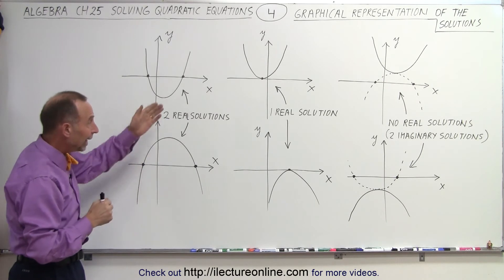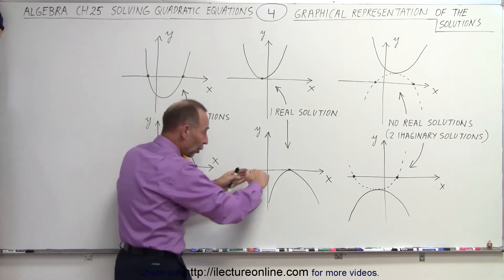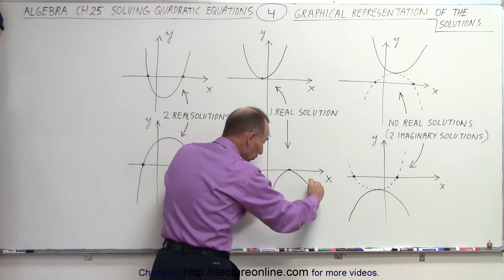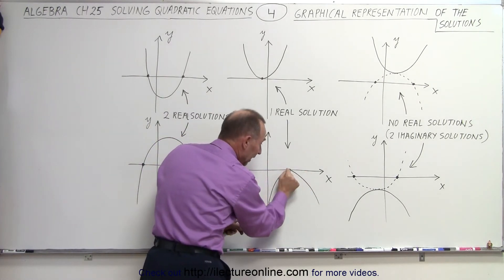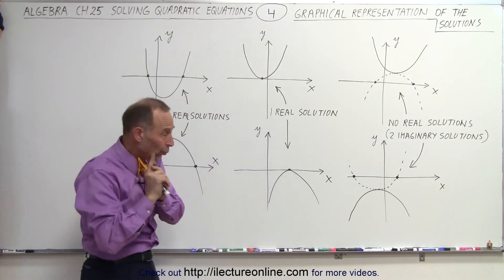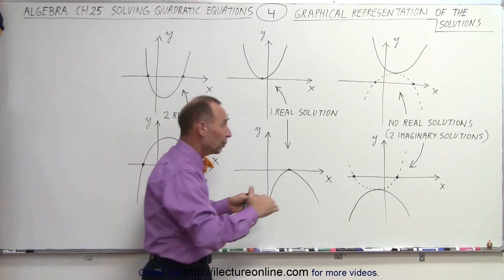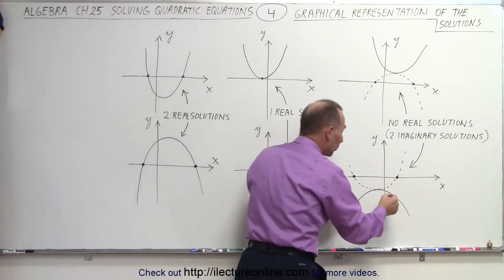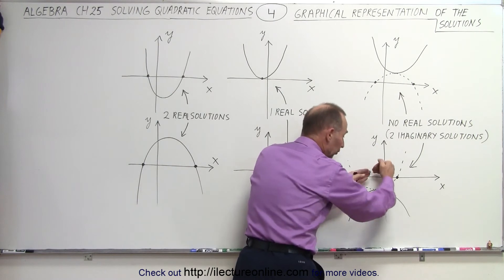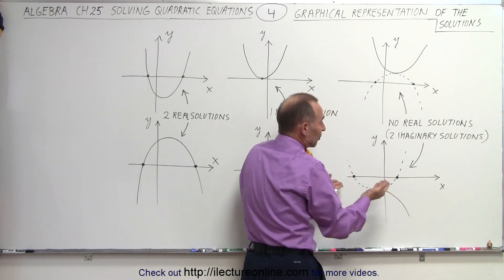If the parabola opens downward and the highest point is right on the x-axis, then there's only one real solution.